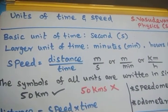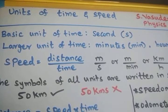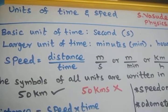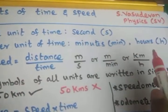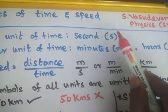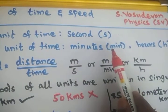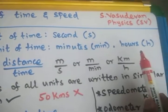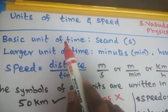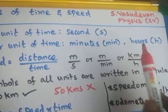We are going to see what the basic unit of time is. Time is measured in seconds, so the basic unit of time is seconds. The larger units of time are minutes and hours. Second can be expressed as small 's', minutes as 'min', and hours as 'h' alone.